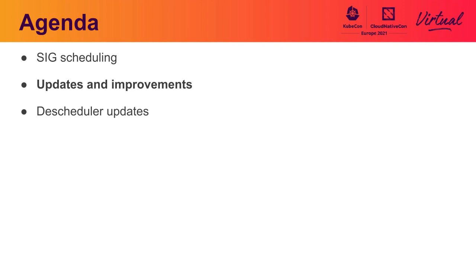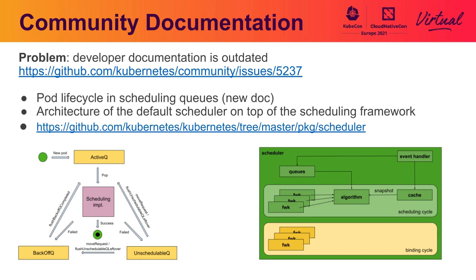There have been some improvements in the documentation for developers. A new document has been created which describes how the scheduling queues work. In short, there are three scheduling queues: active queue, back-off queue, and unschedulable back queue. The active queue keeps pods which can be scheduled. The back-off queue keeps pods which are put to sleep for a while. And the unschedulable back queue keeps pods which cannot be scheduled for some reason. The document describes the lifecycle of a pod and how it transitions between individual queues based on certain conditions or events.